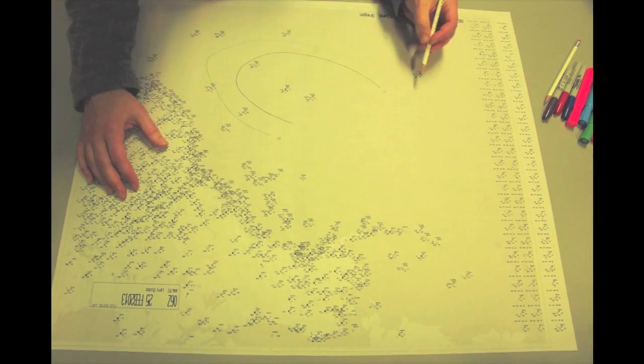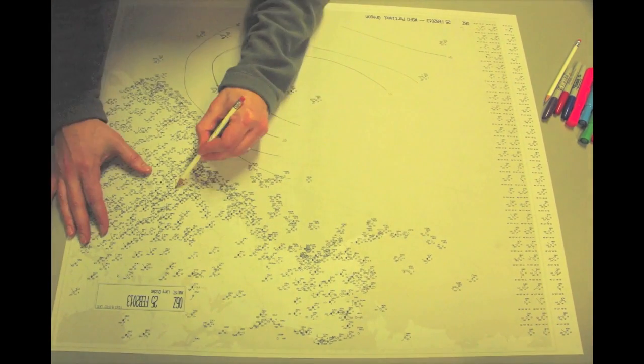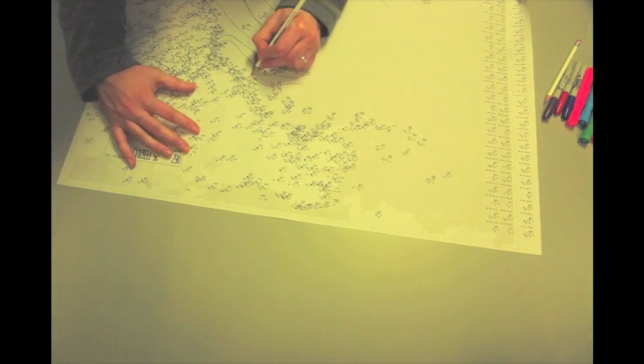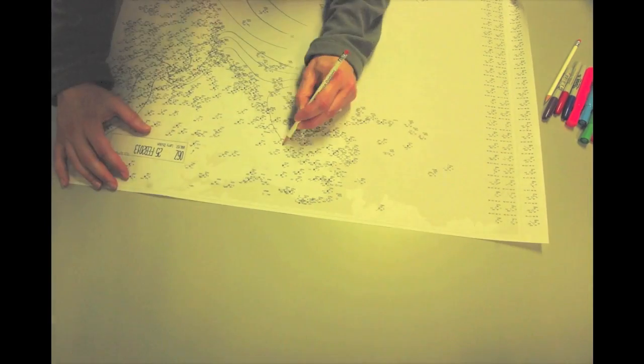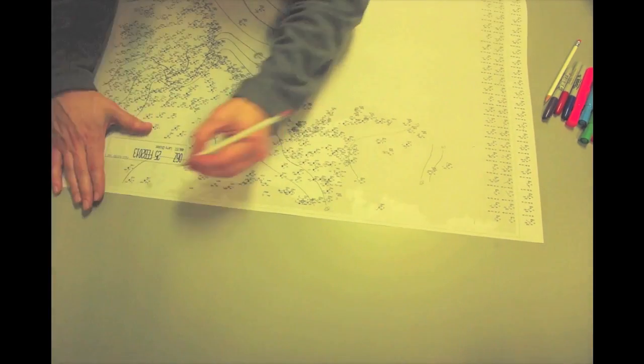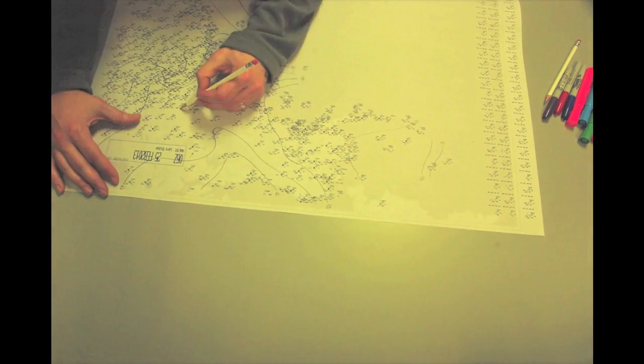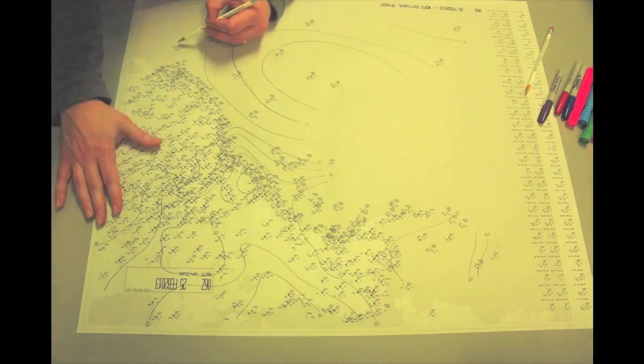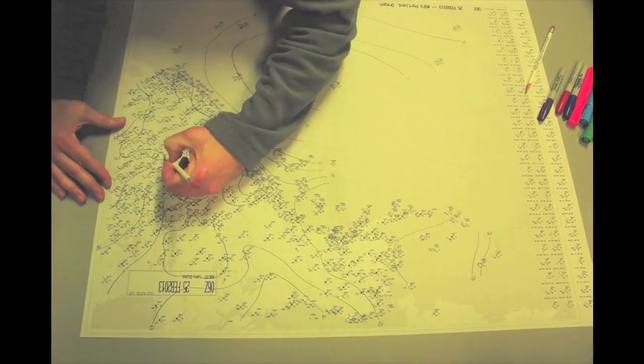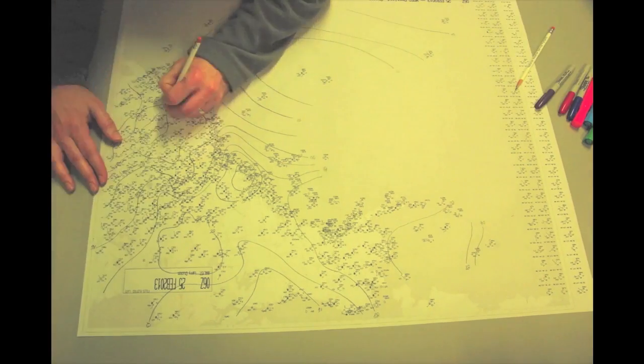Map analyses have traditionally been done by hand. An analyst will draw in lines of constant pressure, kind of a game of connect the dots. The result is something similar to a topographic map showing elevation, except that it is high and low pressure that is revealed. Using the pressure pattern for guidance, but also considering things like wind direction and speed, temperature, dew point, and pressure changes with time, fronts are then drawn in.